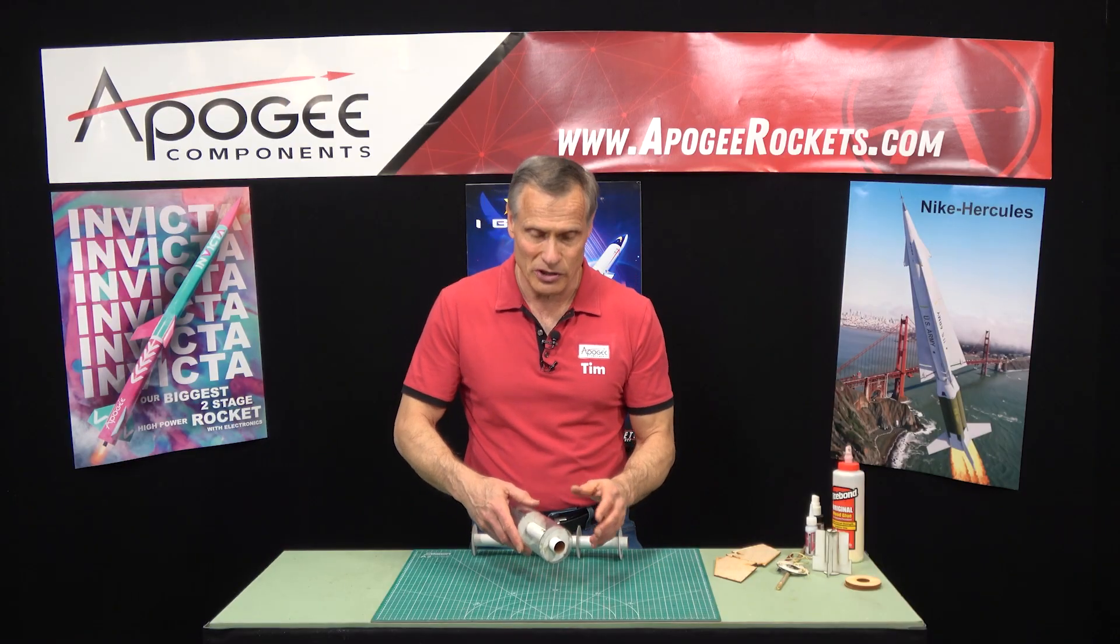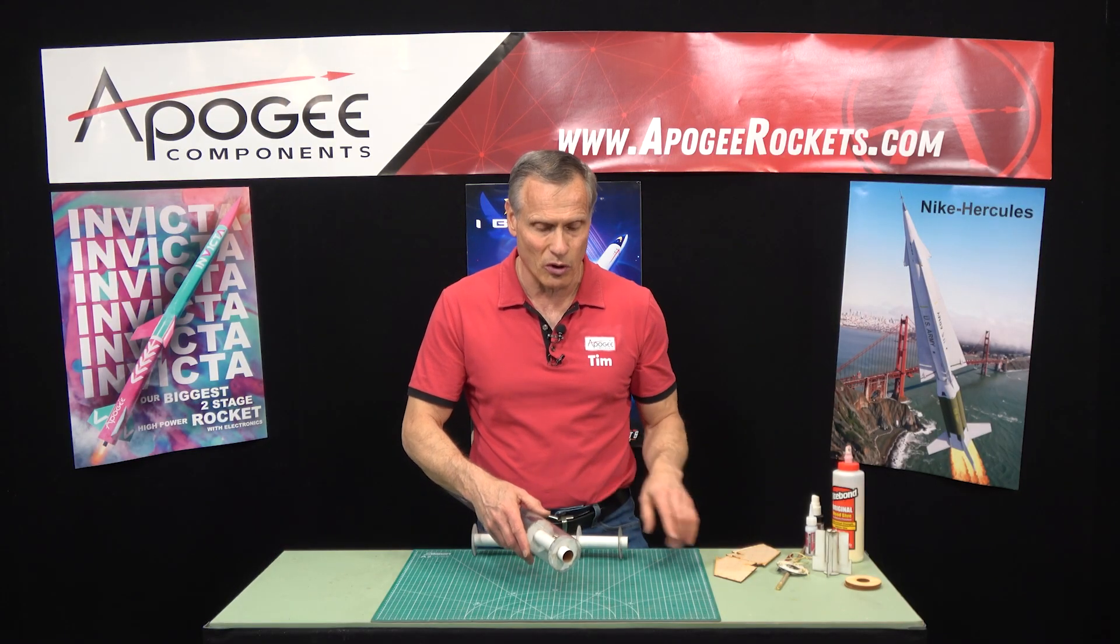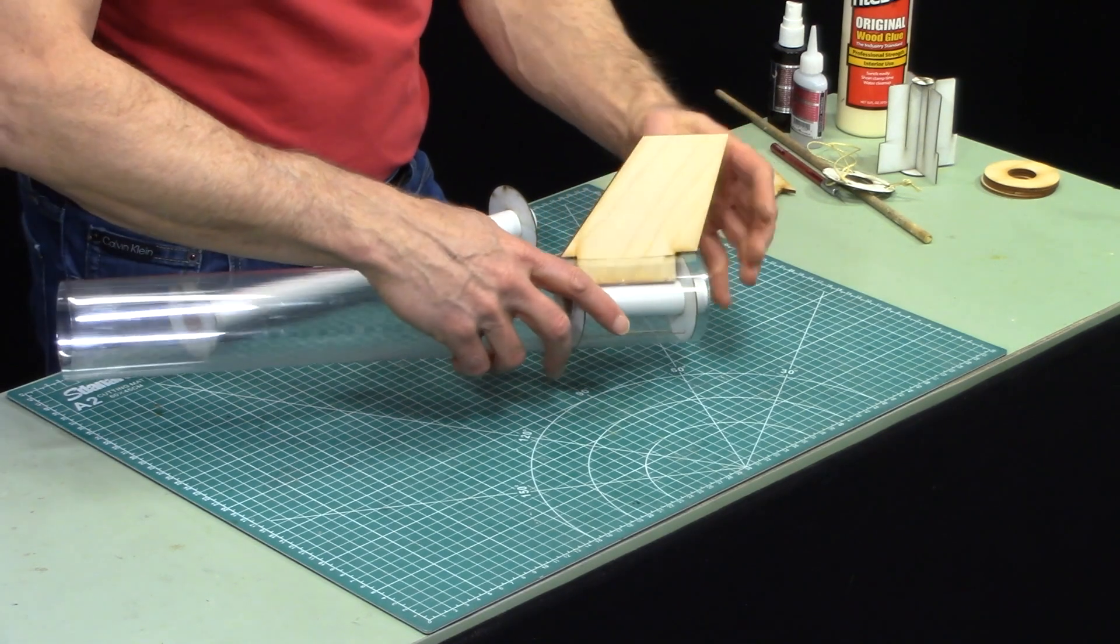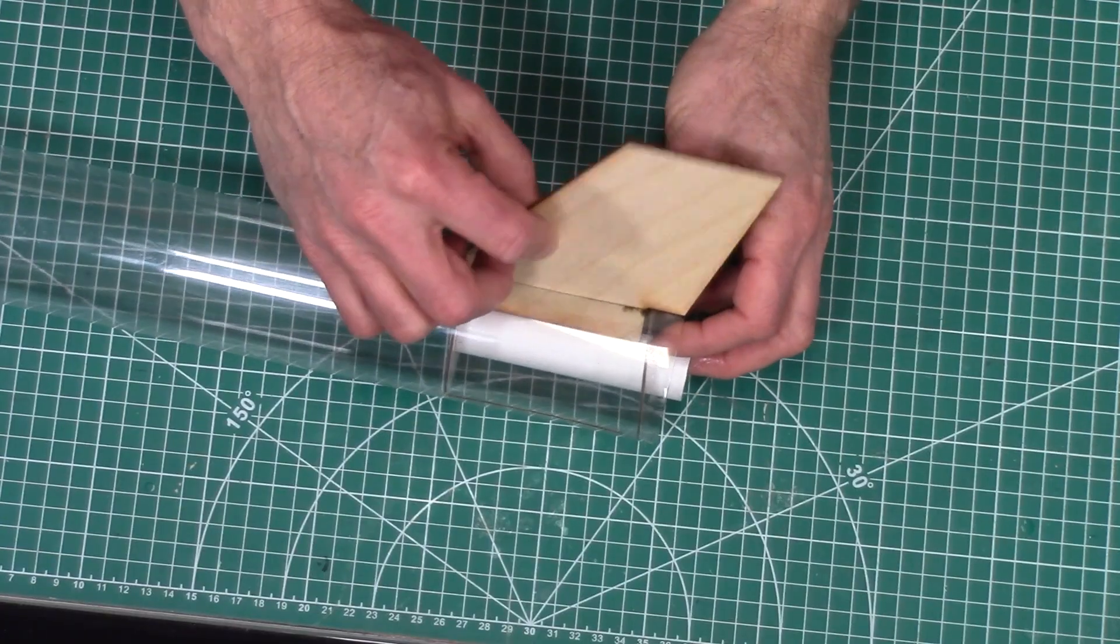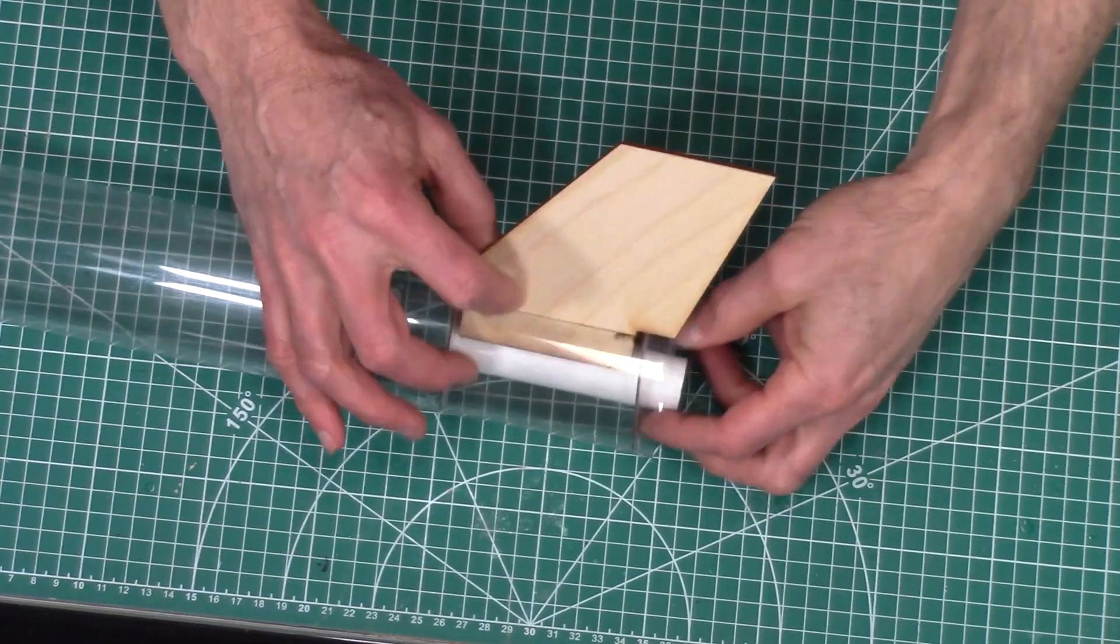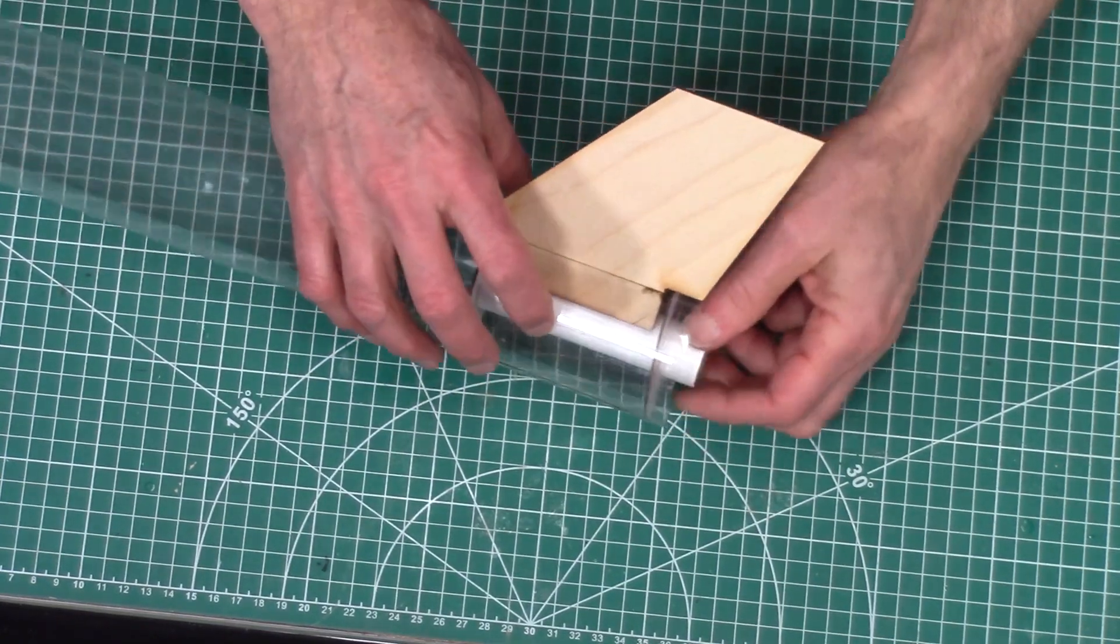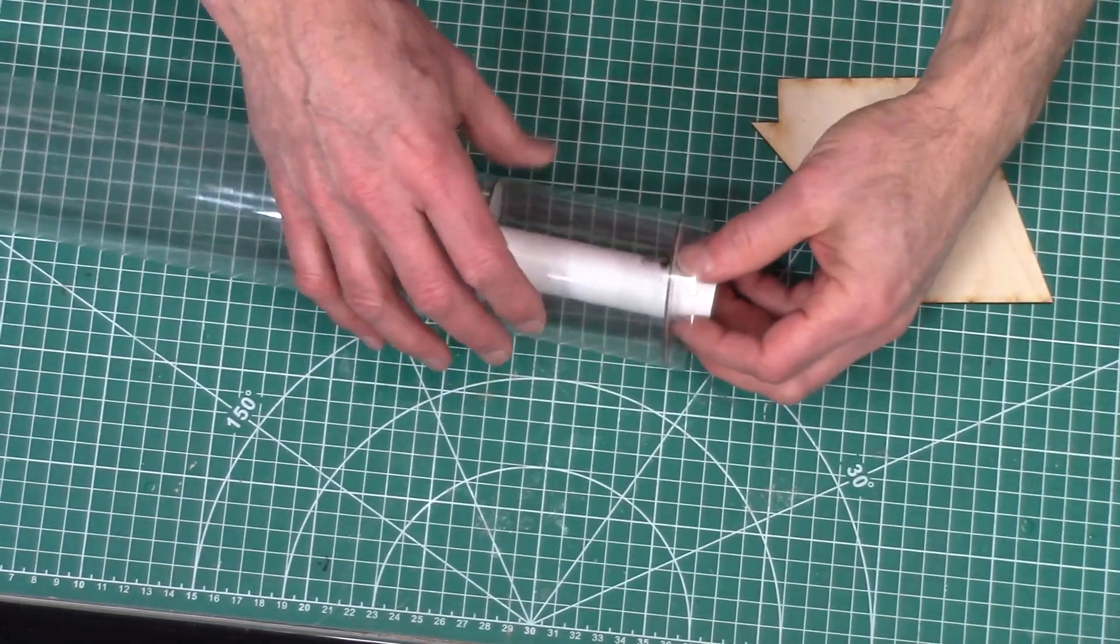The problem with two centering rings especially with through the wall fins is when we put the fins through we want to get a glue fillet along that bottom edge to make sure that it's nice and strong and really bonds to this inside tube.